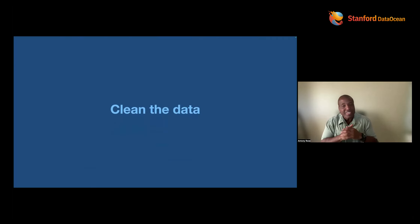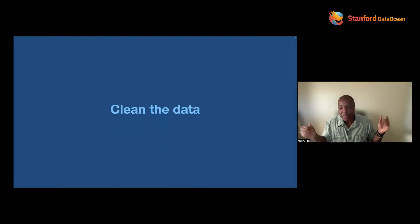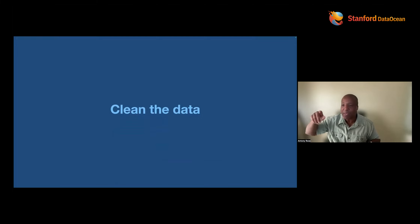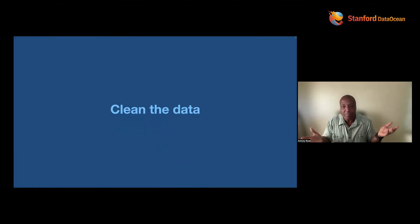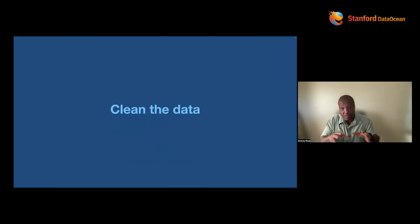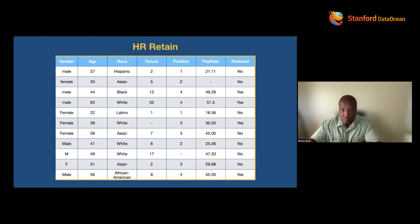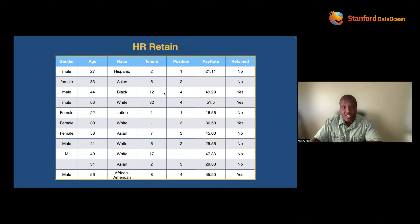The next thing you want to do is clean your data. I love this because this is art. When you write your name in cursive, your A goes this way, maybe mine swirls another way — it's creative. You're going to see what I mean. First, you're going to clean the data. I like to say we're telling the machine the truth about the world — not just cleaning it. You'll see the difference in a moment.